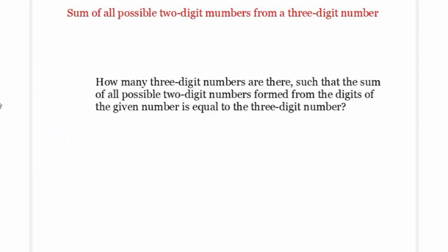How many 3-digit numbers are there such that the sum of all possible 2-digit numbers formed from the digits of the given number is equal to the 3-digit number itself?